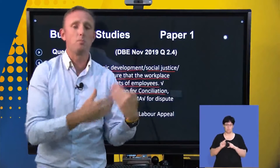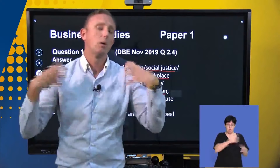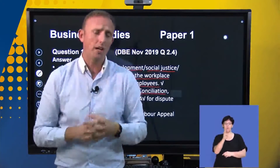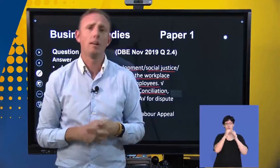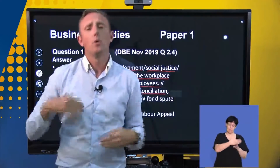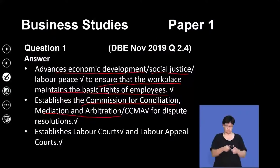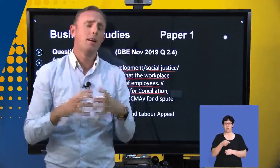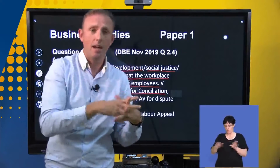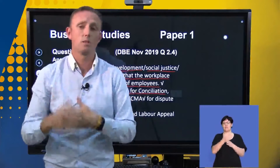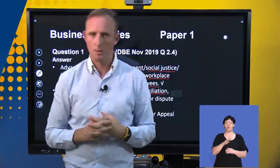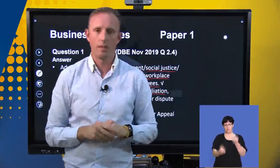If there's a dispute between the employer and the employee, they will go to the CCMA, which will be objective and set out a ruling that either the employer or the employee will have to follow. It also establishes the labour court and the labour appeal court. If the employee isn't happy with the CCMA ruling, they can go to the labour court, and if the labour court finds against either party, they can go to the labour appeals court to appeal the outcome.